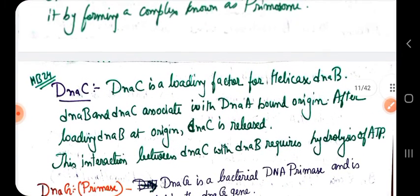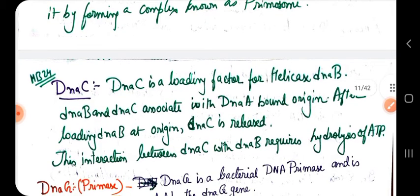DnaC is the helicase loader. It associates with DnaB and helps the helicase bind and accommodate the single-stranded DNA at the 13-mer regions. After loading DnaB at the origin, DnaC is released by ATP hydrolysis.